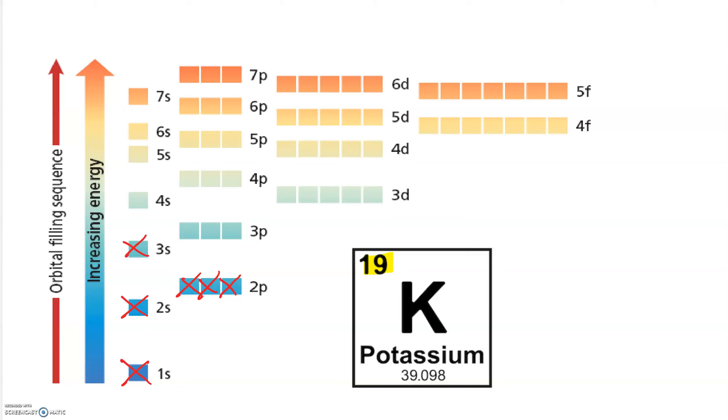So up to now things have been pretty cut and dried. And so we're going to go to an element like potassium and you're going to see that things go slightly off the rails. Potassium has 19 electrons. So we're going to put them in the appropriate orbitals in their appropriate order starting all the way at the bottom as per the Aufbau principle.